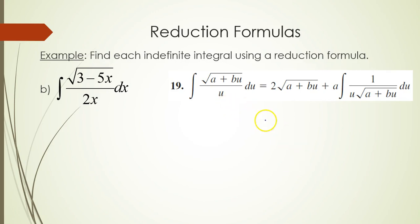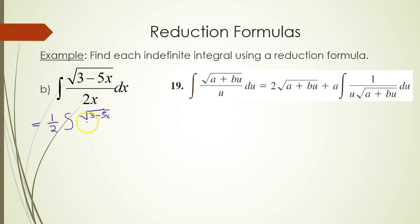Let's do another one. Let's integrate the square root of 3 minus 5x over 2x. Before looking for any formulas, I first want to take that 2 on the bottom and bring it out front of the integral as a half. So I'm integrating the square root of 3 minus 5x over x with respect to x. You'll notice formula number 19 is the winner, as shown on the screen.